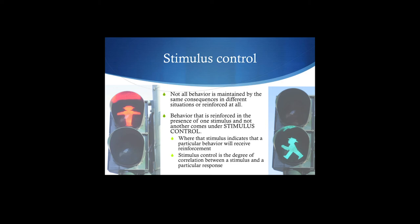Crossing the street is also stimulus control. Think about the one rule you were always told growing up: look both ways before you cross the street — look left, look right, then go. When you look left and right, what you're identifying are discriminative stimuli: are there cars present? The lack of cars, or the distance of cars, signals whether it's okay to cross.